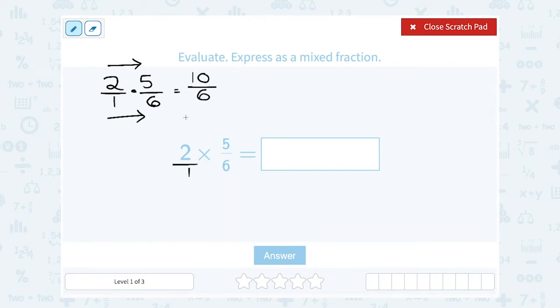Now notice this is an improper fraction, meaning the top number is bigger than the bottom. So when that happens, we want to simplify to a mixed fraction or a mixed number. I want to think, how many times does 6 go into 10? Because fractions mean the same thing as division. This means 10 divided by 6.